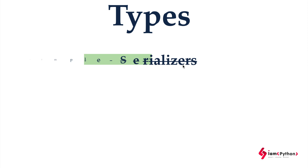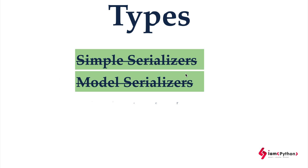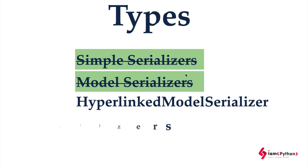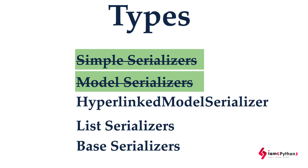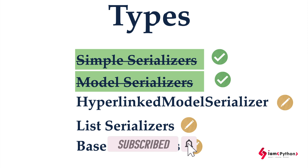Hi, welcome to the Django REST Framework tutorial. As we know, we already completed two types of serializers. There are actually multiple types: simple serializer, model serializer, hyperlink model serializer, list serializers, and base serializers. We already completed simple serializers and model serializers, but we still need to discuss hyperlink model serializer, list serializers, and base serializers — those I will cover after a few sessions.